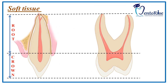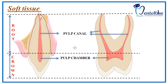The soft tissue of the tooth is the pulp, which is present in both the crown and the root. It furnishes the blood and nerve supply of the tooth. The crown consists of the pulp chamber and the root consists of the pulp canal. Together, the pulp chamber and the pulp canal are continuous with each other and they constitute the pulp cavity.